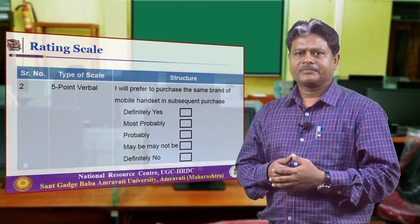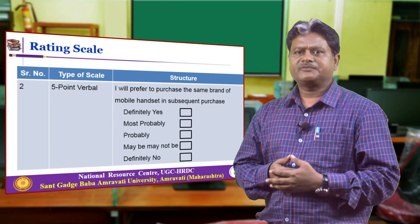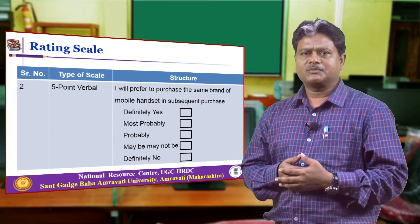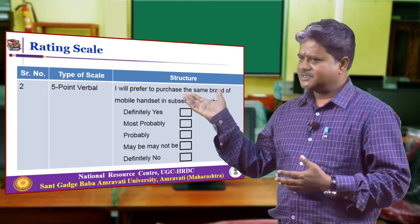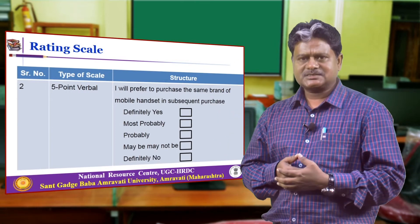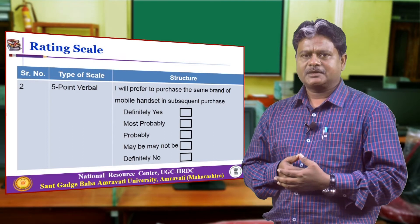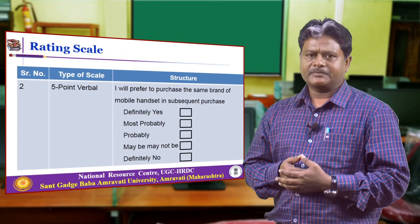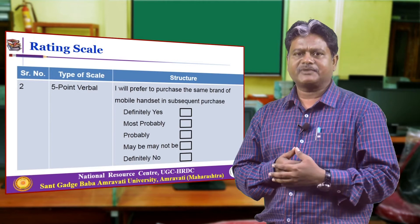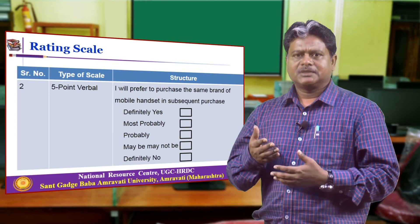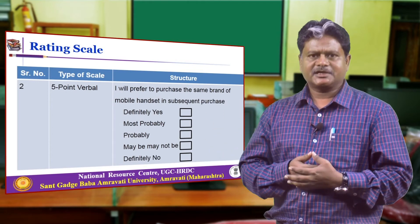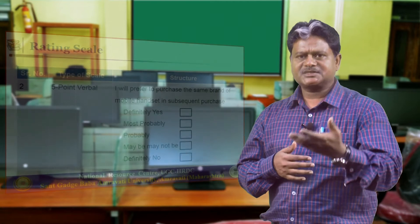This is another example of the 5-point verbal scale, where the question is: 'I will prefer to purchase the same brand of mobile handset in subsequent purchase.' The options in this case are: definitely yes, most probably, probably may be or may not be, and definitely no. Depending upon the option selected by the respondent, we will be able to judge some of the attitudinal information of the respondent.